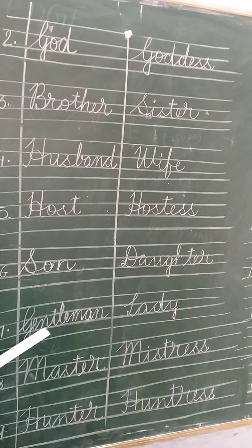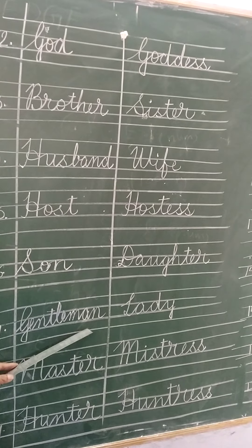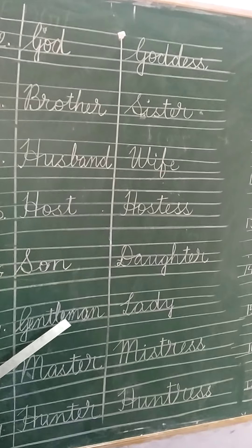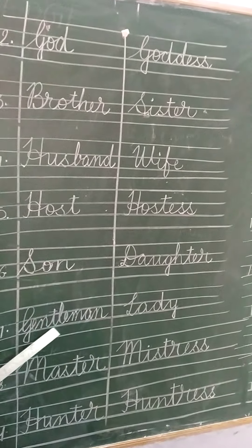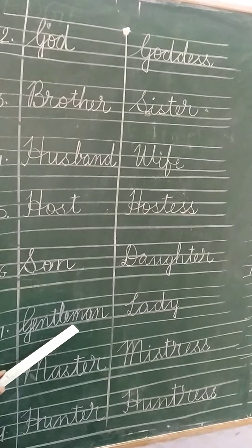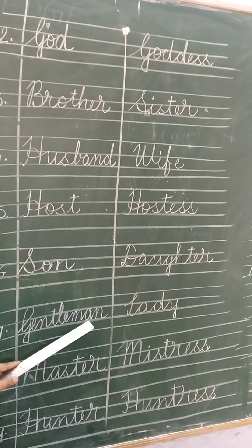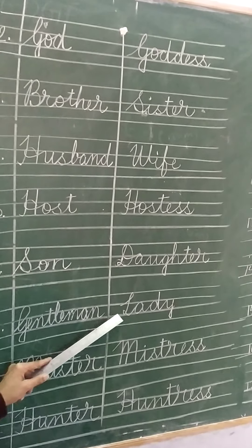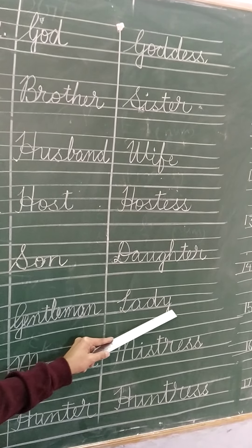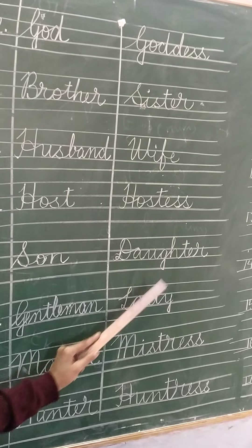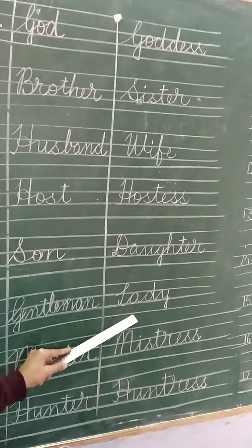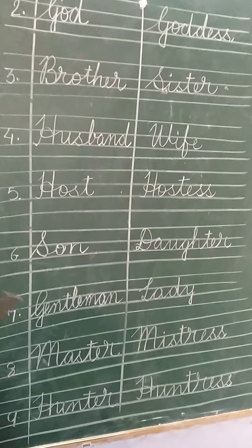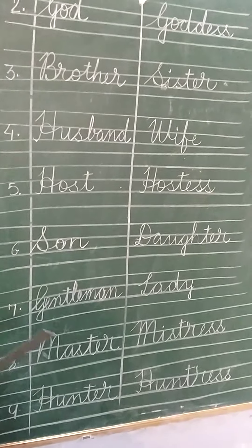Gentleman — you know very well, man is the male person. Gentleman — G-E-N-T-L-E-M-A-N. And the feminine gender of gentleman is lady — L-A-D-Y. Lady means you know very well — lady is a girl, female, woman.